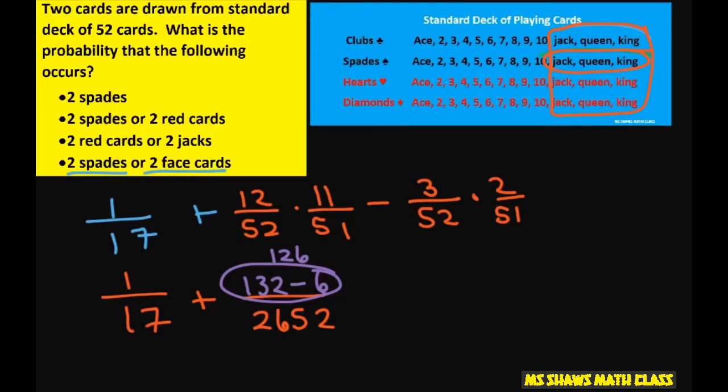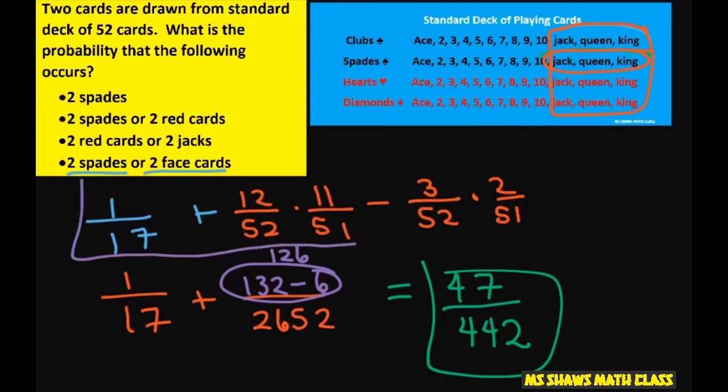It makes it easier to put in the calculator, and you're going to end up getting 47 divided by 442. So technically, you could just put this in the calculator and be done with it. It's a little more accurate that way. Anyway, that's it. Thank you. Have a nice day. Bye bye.